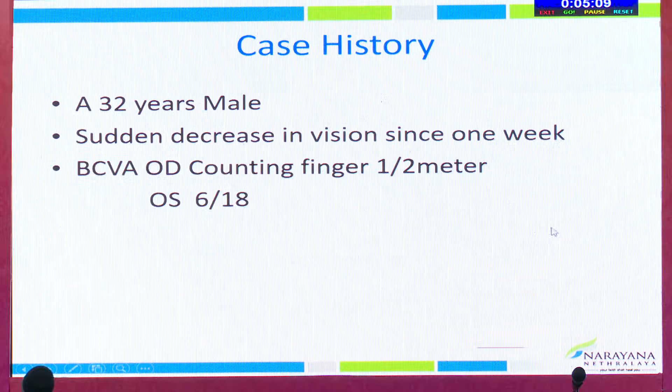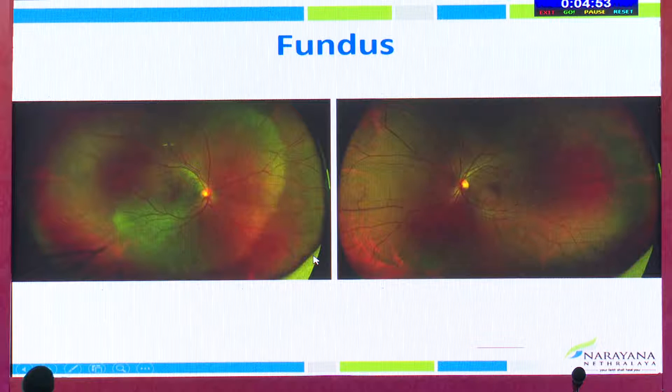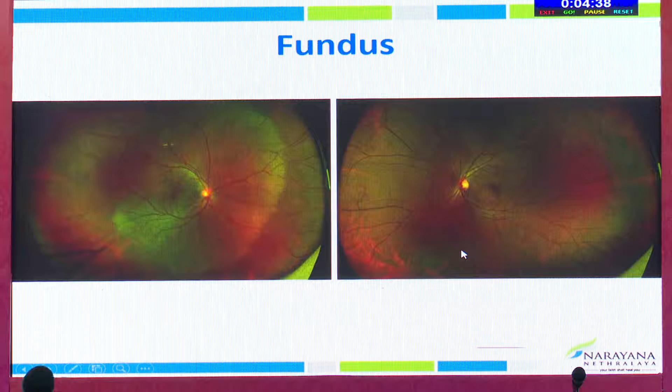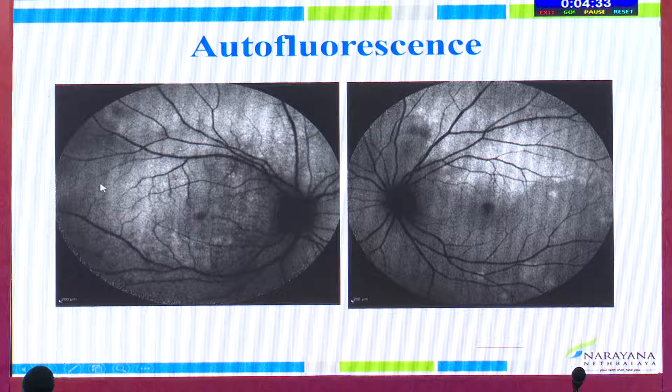Moving on to the next case: a 32-year-old male presented with sudden decrease in vision since one week. Best corrected visual acuity at presentation was counting fingers at half meter in the right eye, and 6/18 in the left eye. On fundus examination, the patient had traces of vitreous cells, the disc looks normal, and there is annular retinal opacification in the right eye. The left eye fundus is absolutely normal. When I subjected the patient to autofluorescence, you could see areas of hyperautofluorescence in both eyes — especially in the left eye, you could see a triangular pattern of hyperautofluorescence.